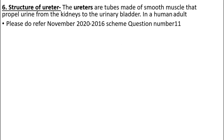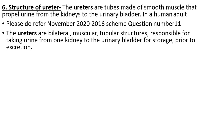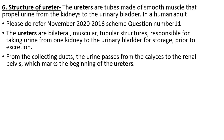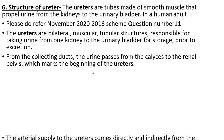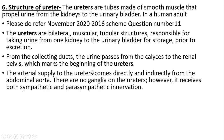Next is the structure of the ureters. This has also been referred to in the 2010-2016 scheme. The ureters are bilateral muscular tubular structures responsible for taking urine from the kidney to the urinary bladder for storage prior to excretion. From collecting ducts, urine passes to the calyces and then the renal pelvis, which marks the beginning of the ureters.